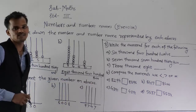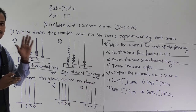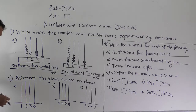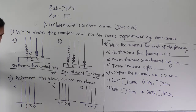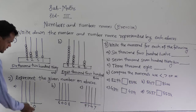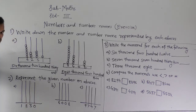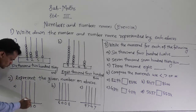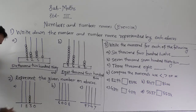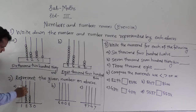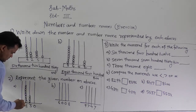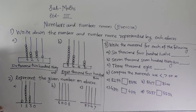Next, we have to represent the given numbers on the abacus. The first number is 1830. At the ones place, zero is there, so don't put any bead into that spike. At the tens place, put three beads. At the hundreds place, put eight beads. At the thousands place, put one bead. This abacus shows 1830.